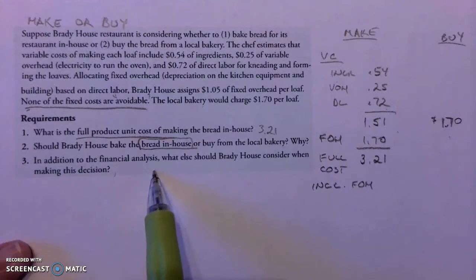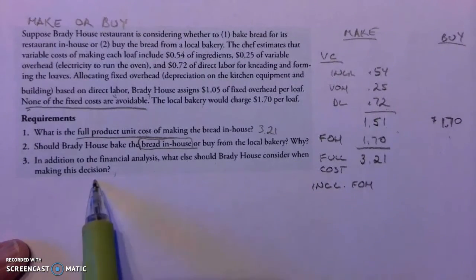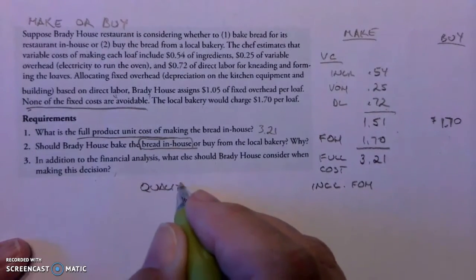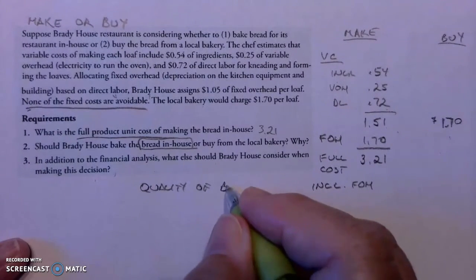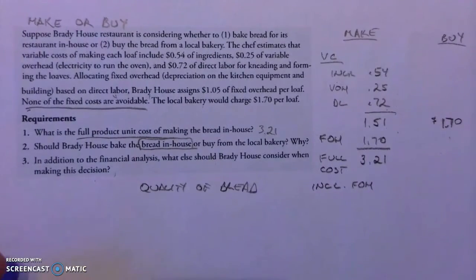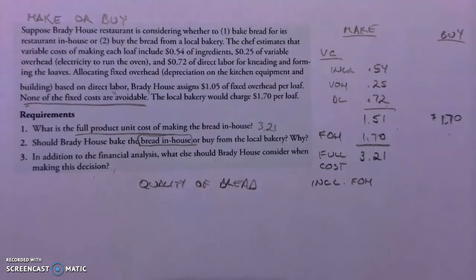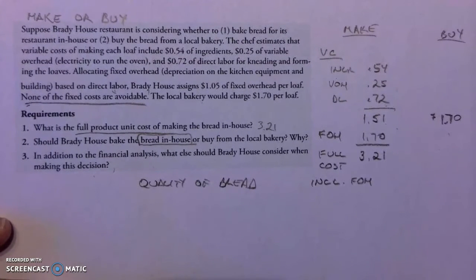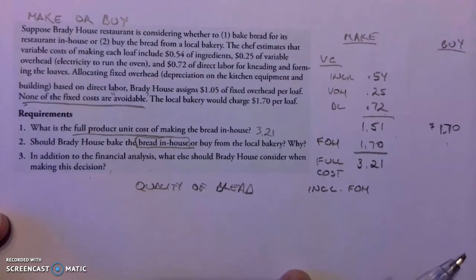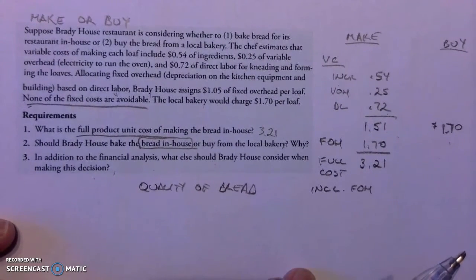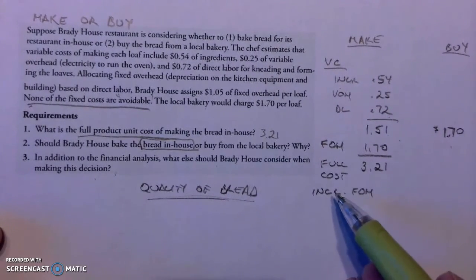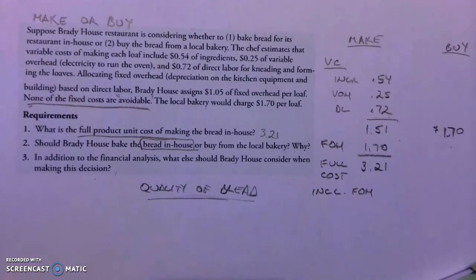In addition to the financial analysis, what else should Brady House consider? The quality of the bread — if you're buying from somebody and it isn't good, bad bread reflects on the whole meal, and people are sensitive to that. You also lose control over quality as soon as you outsource something. That is the big issue: once you outsource, you've lost your control over quality.